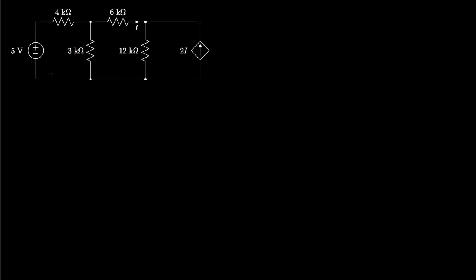For our first example, we'll look at a circuit with a 5-volt voltage source and a dependent current source whose current is proportional to the current through this 6-kilo-ohm resistor. To analyze this circuit, we first assign our reference point, or ground, to the bottom node, then assign the voltages V1 and V2 relative to ground to the two other extraordinary nodes. We have one other node here — an ordinary node that connects only two elements — and we won't assign a voltage to that one.